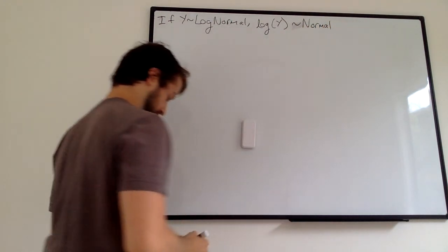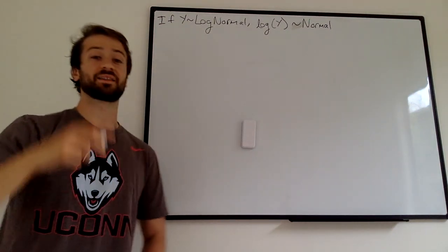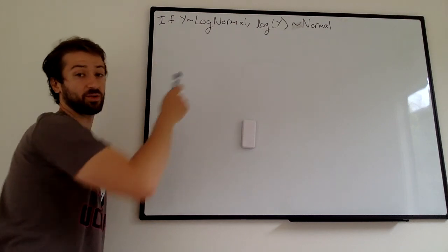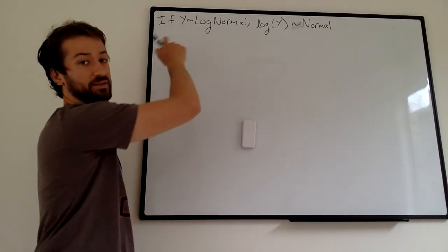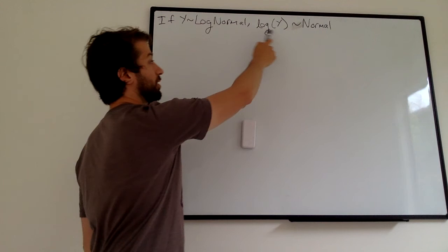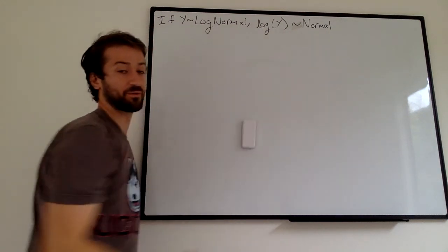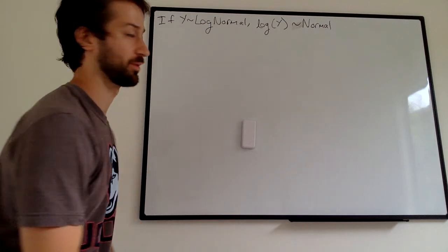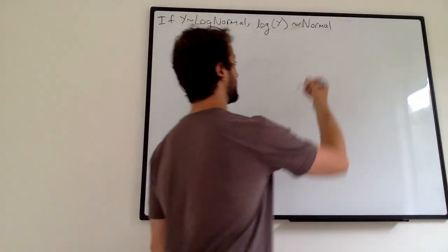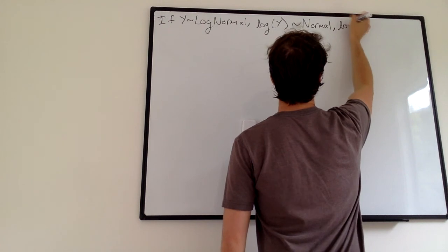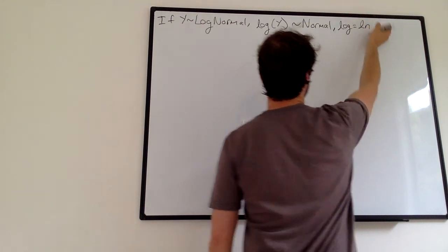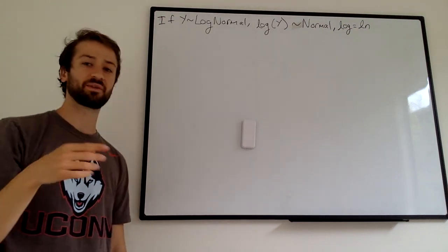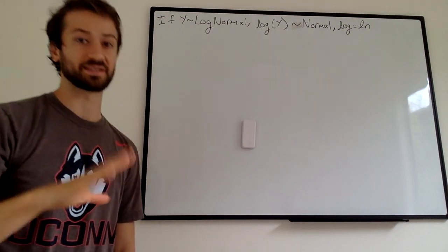The log-normal basically means that the log is normal. So if you have a random variable y, and it has a log-normal distribution, that means that the log of y is normal. So if y is log-normal, if you take the log of y, you're going to get a normal distribution. Also, whenever we say log, we mean the natural log. I know that can be annoying, but we're using base e — instead of writing ln, we write log — so we're not using base 10, we're using base e.